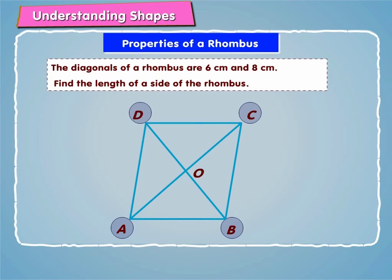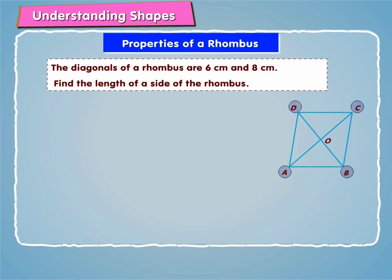Let ABCD be the rhombus whose diagonal AC is equal to 8 cm and BD is equal to 6 cm whose diagonals AC and BD bisect each other at O as shown on screen.